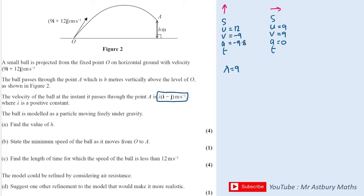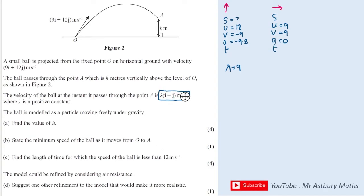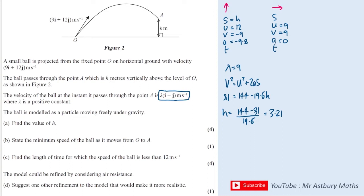So we can use the vertical SUVAT to work out the height H. We're looking for the equation that doesn't have T, which is v² = u² + 2as. We have v² = (-9)² = 81, u² = 12² = 144, and 2a = 2 × (-9.8) = -19.6, multiplied by s, the height. Rearranging gives height = (144 - 81) / 19.6, which comes out as approximately 3.21 metres.